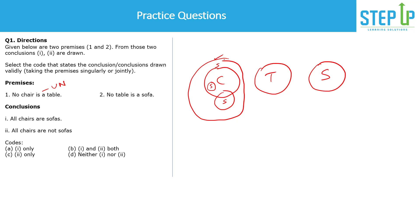The conclusion asks: can we say 'all chairs are sofas'? In one case where sofa is the bigger circle, this is true, but in other cases it is false. The moment it's invalid in even one case, we reject it. Similarly, 'all chairs are not sofas' (i.e., 'no chair is a sofa') is true in some cases but not all. Therefore, neither conclusion one nor two can be drawn.